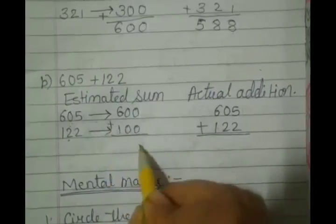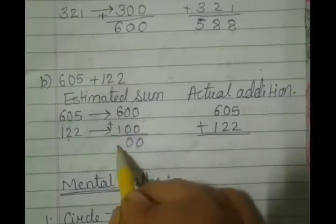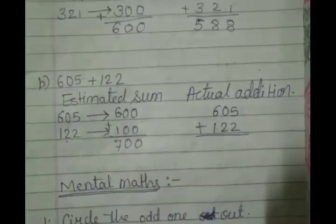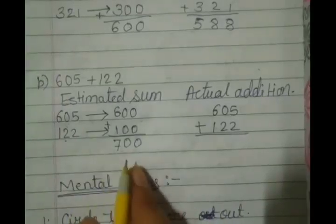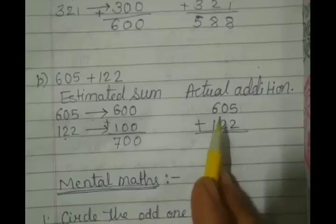Let's add 0 plus 0, 0, 0 plus 0, 0, 6 plus 1, 7. That estimated sum is 700.